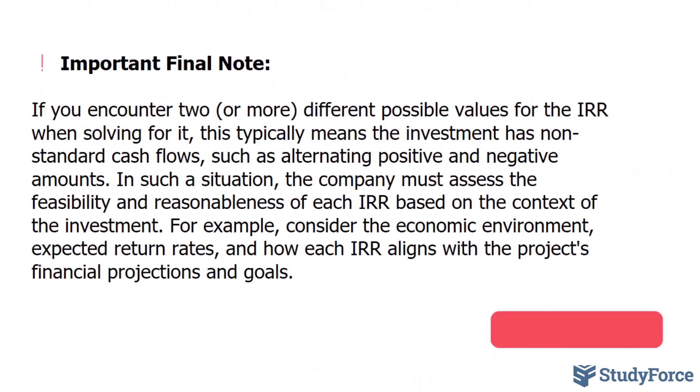So if you encounter two or more different possible values for the IRR when solving for it, this typically means that the investment has non-standard cash flows, such as alternating positive and negative amounts as I just discussed.